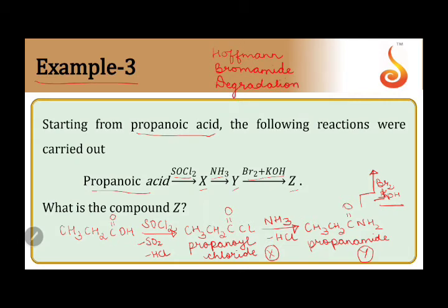In this reaction, we start with an amide but get a product with one carbon less. Therefore, from 3 carbons we end up with a 2-carbon compound: CH3CH2NH2. This compound is called ethylamine.